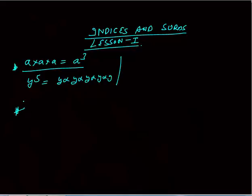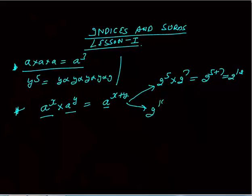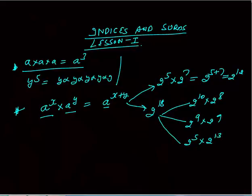First rule: if I say A power X into A power Y, this will be equal to A power X plus Y. When the base is the same, the powers get added. For example, 2 power 5 into 2 power 7 becomes 2 power 12. You must know both sides — if 2 power 18 is given, you can break it as 2 power 10 into 2 power 8, or 2 power 9 into 2 power 9, or 2 power 5 into 2 power 13. You can break it in many ways, but the key is: when the base is the same, the powers get added.